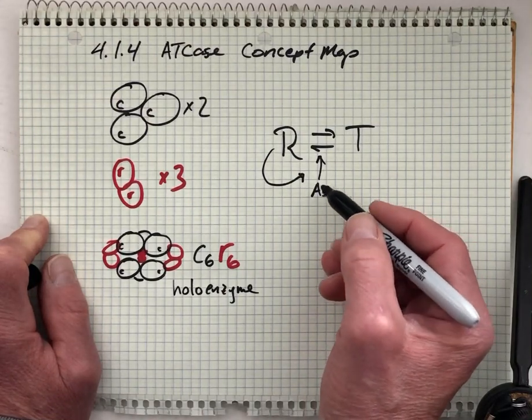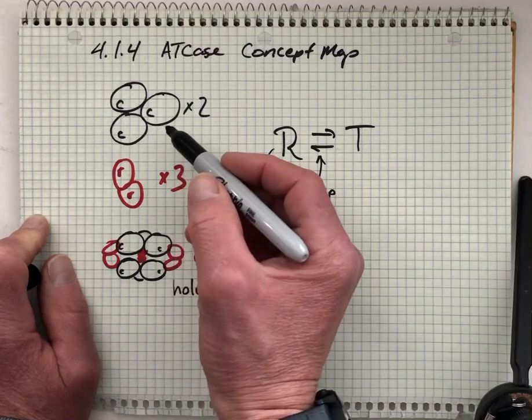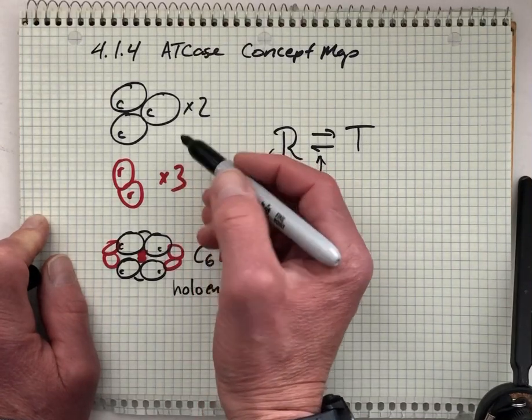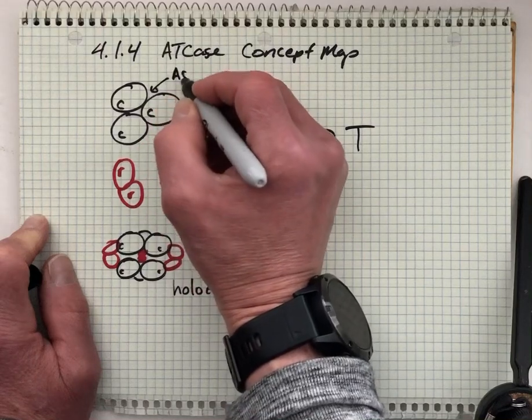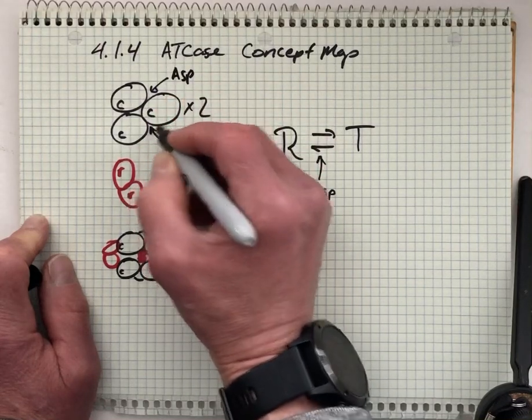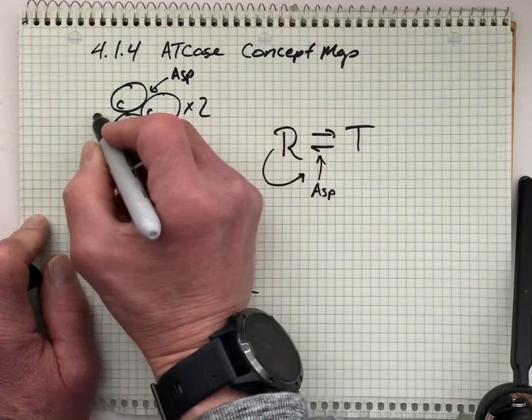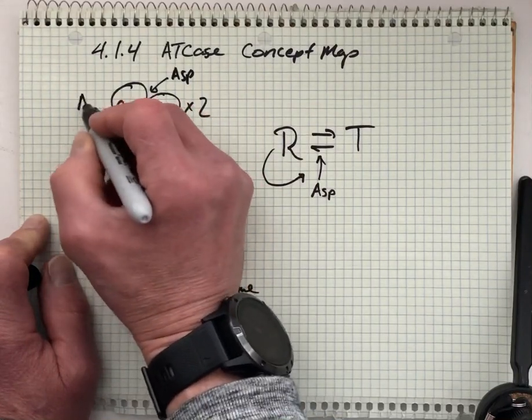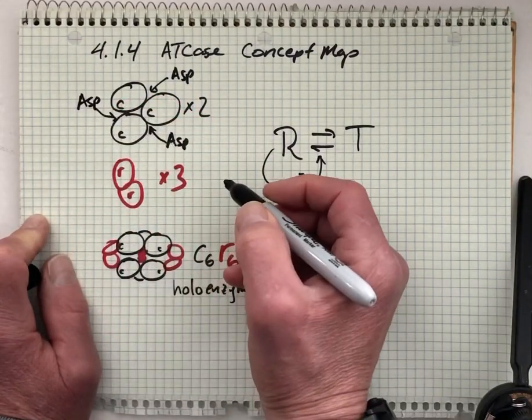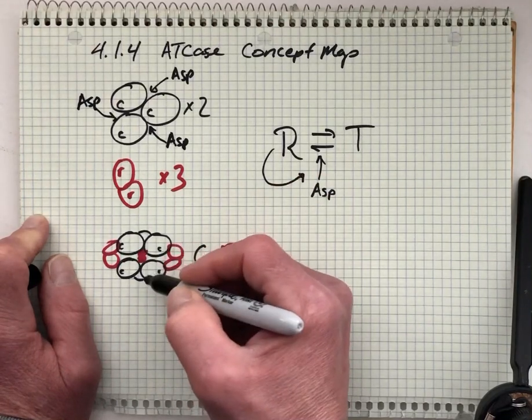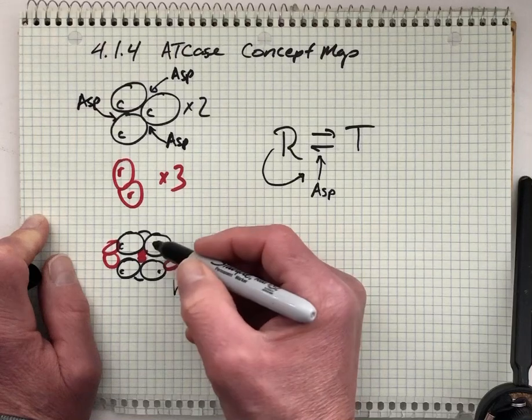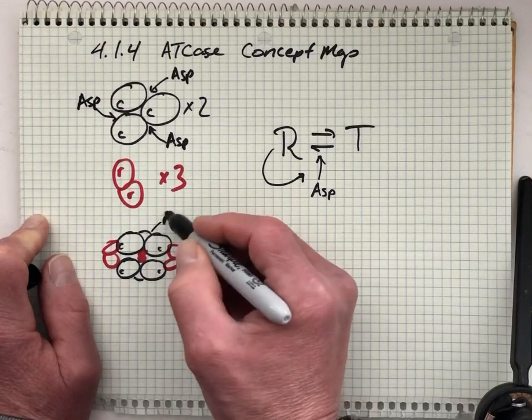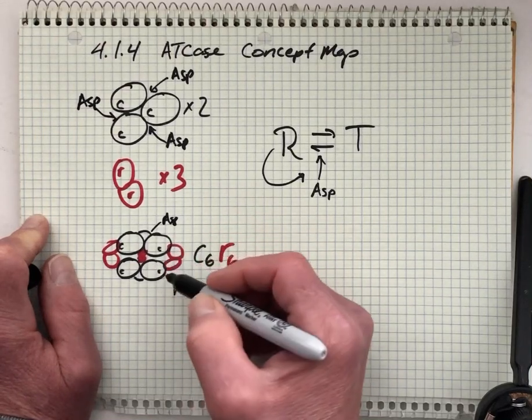At some tipping point, enough of these binding sites on the catalytic subunits... aspartate, the substrate, is binding. There's three substrate binding sites found at the interface between the catalytic subunits. And because there's two such catalytic trimers, there's a total of six aspartate binding sites, all associated with binding these catalytic subunits.